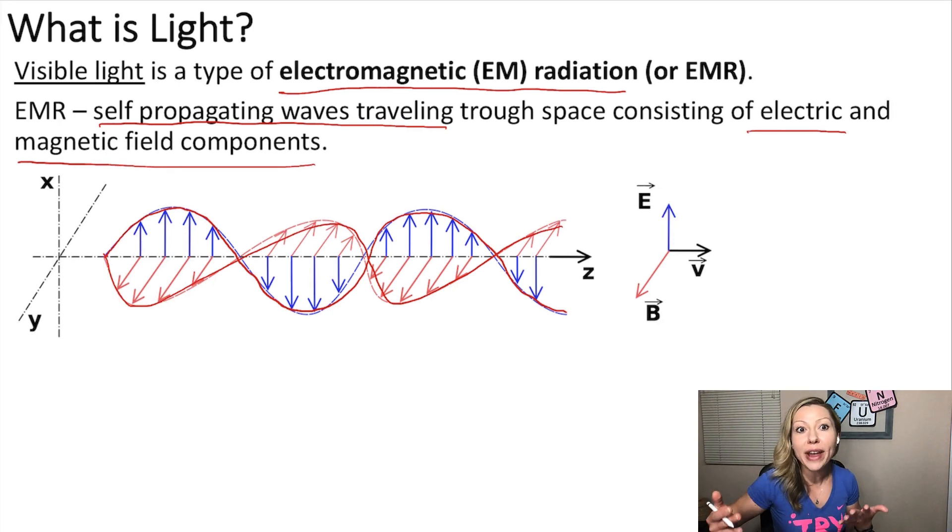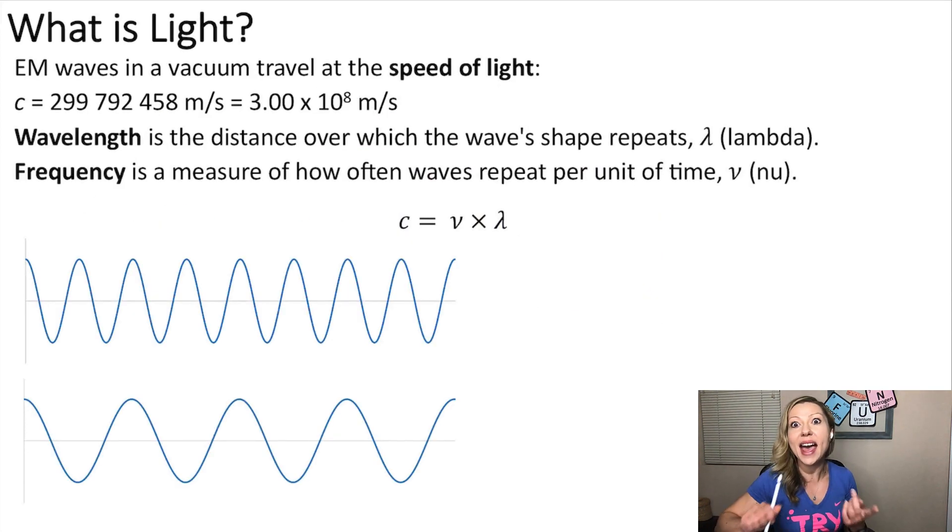Similarly, to all other waves, light is characterized by frequency and wavelengths and also a speed. The speed of light is actually a constant. It is the speed with which light travels in a vacuum and it is 3 times 10 to the 8th meter per second.